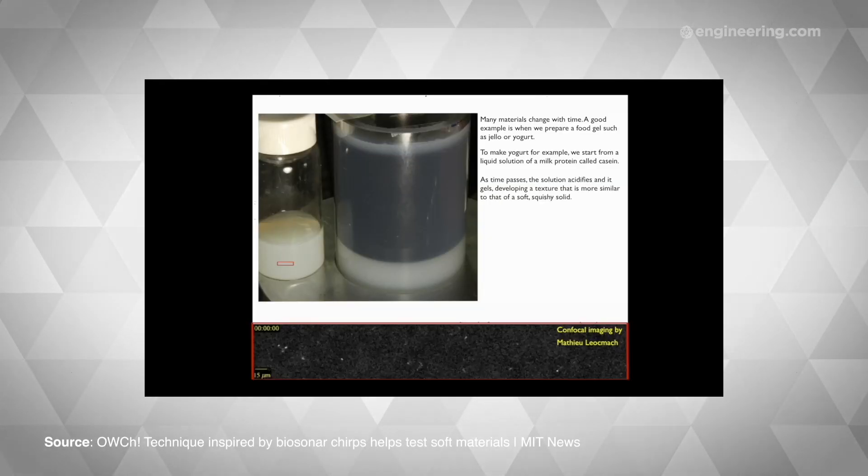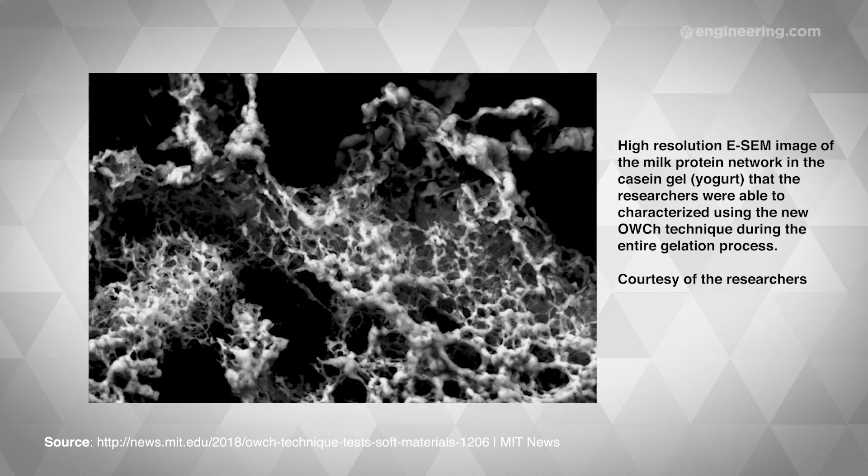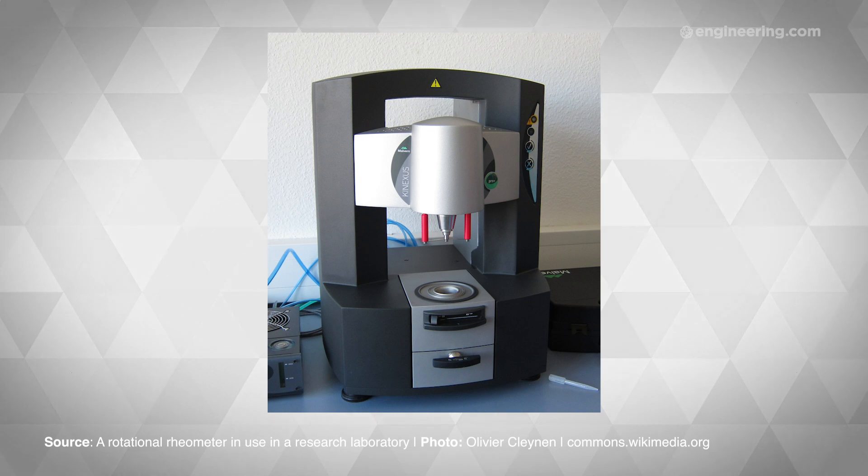Now, a team of MIT engineers have come up with a faster, more accurate way to measure the properties of soft materials, such as drying cement and clotting blood. The new technique is based on an instrument called a rheometer, which is used to measure fluids that can't be defined by a single value of viscosity.